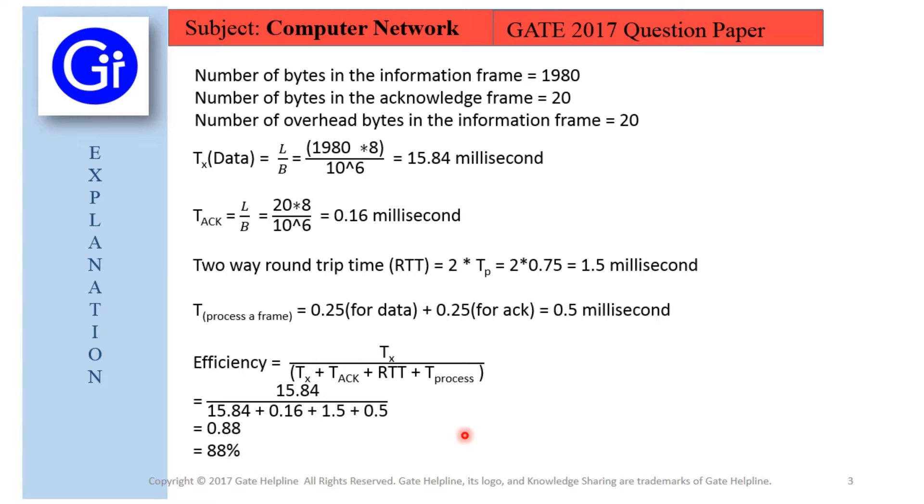In this question we have an ambiguity regarding the frame size. So we have taken three options which can be the answer: number of bytes in the information frame as 1980 plus 20, which evaluates to 88.10%, and number of bytes in the information frame as 1980 minus 20, which evaluates to 87.11%.